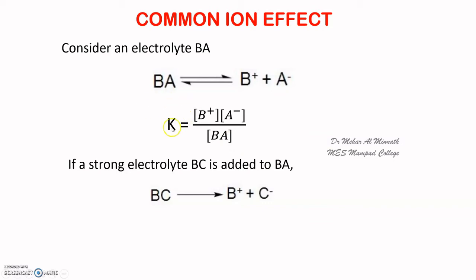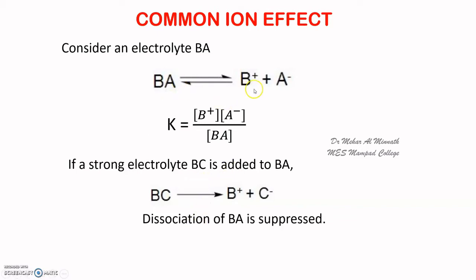Since K must remain constant, there will be a momentary alteration of the equilibrium. To maintain the equilibrium constant K, the ionization of BA will be suppressed. When BC is added, the concentration of B plus increases, so to keep K constant, the A minus ion concentration decreases — which happens only when BA does not ionize. So the ionization or dissociation of BA is suppressed.